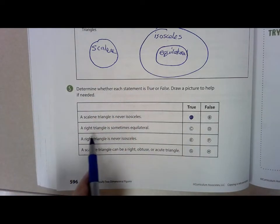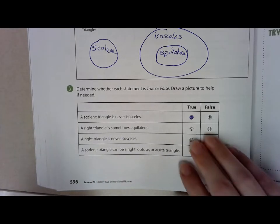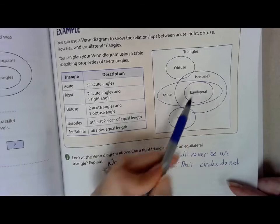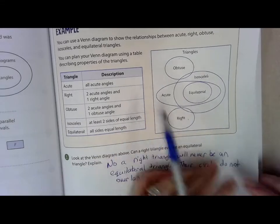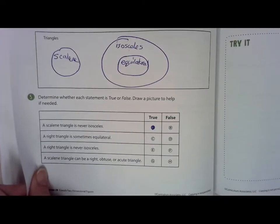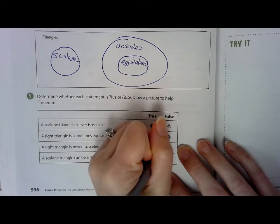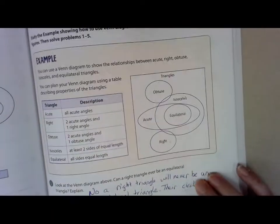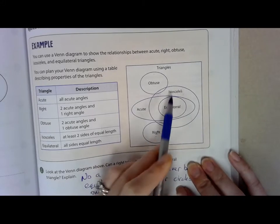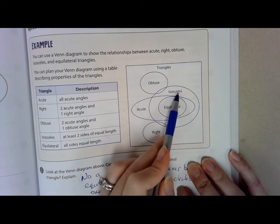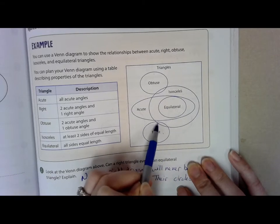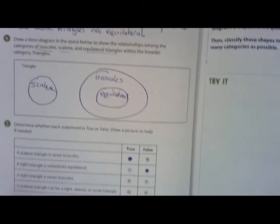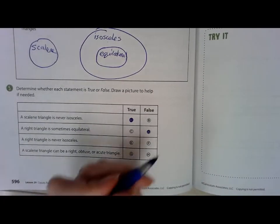Next: a right triangle is sometimes equilateral. Looking at the diagram, those two circles are not overlapping at all, so that is false. Then: a right triangle is never isosceles. The right triangle and isosceles circles do overlap, so sometimes a right triangle is isosceles. That statement is false, because they are sometimes isosceles.